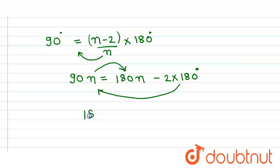So it becomes 180n minus 90n equals 360 degrees. So it becomes 180 minus 90 is 90, so 90n equals 360.